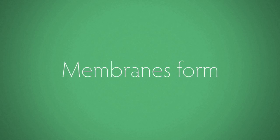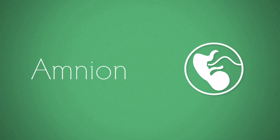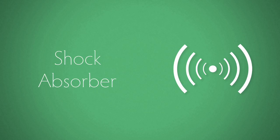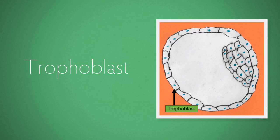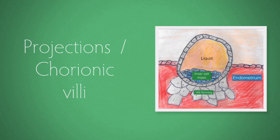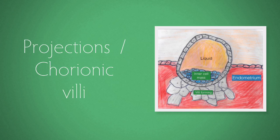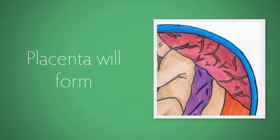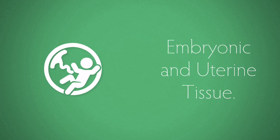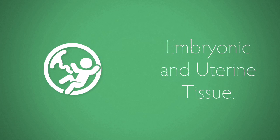Within the blastocyst, membranes begin to form. The most notable is the amnion, which contains amniotic fluid that acts as a shock absorber to protect the baby. The outer layer of the blastocyst, known as the trophoblast, develops finger-like projections known as chorionic villi which burrow into the endometrium. This forms the placenta, which is why we say the placenta is formed from both embryonic and uterine tissue.